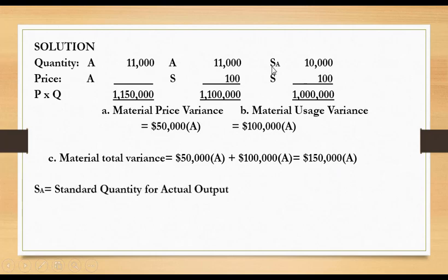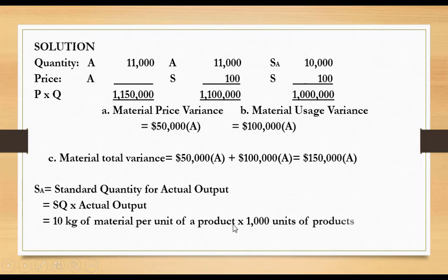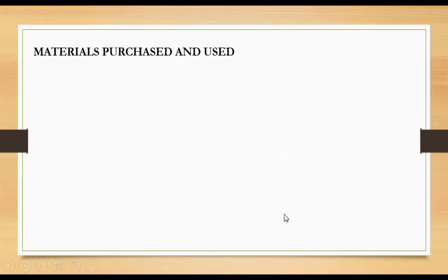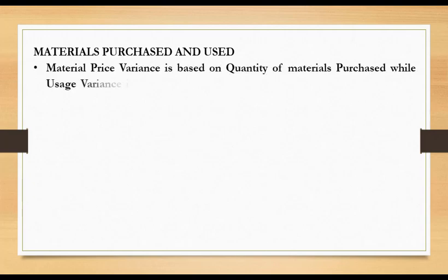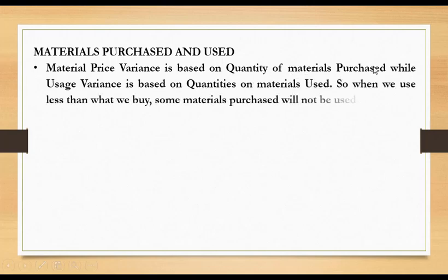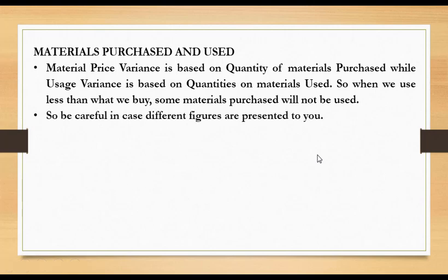The standard quantity for actual output is calculated as standard quantity times actual output: 10 kilograms per unit multiplied by 1,000 units of production equals 10,000 kg. Note that there is a distinction between materials purchased and materials used. The material price variance is based on quantity of materials purchased, while the usage variance is based on quantity of materials used. Be careful when different figures are presented for each.